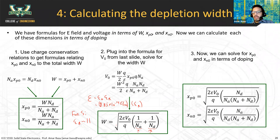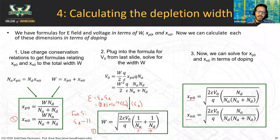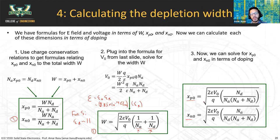Finally, we can solve for XP0 and XN0 individually in terms of doping. If asked for the depletion width on just the P or N side, you can use the individual formulas. Most of the time, the approach would be to calculate the total width first using the main formula, and then use the relative-width formulas to find XN0 and XP0. There are a lot of numbers involved, so make sure you check over your work.